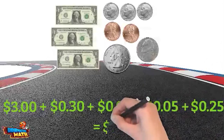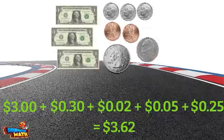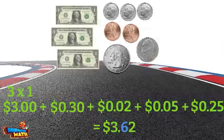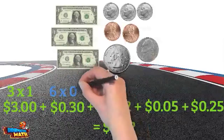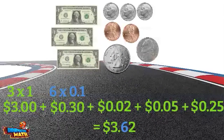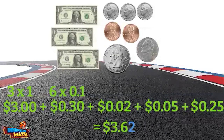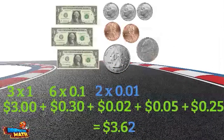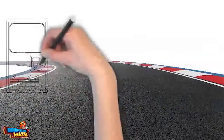Add up the values of all the coins and bills to get three dollars and sixty two cents. There is a three in the ones place with a value of three. There is a six in the tenths place with a value of six tenths — there were only three dimes, but the other coins increased the value of the tenths place. There is a two in the hundredths place with a value of two hundredths. Do you have any change I can borrow? I saw a vending machine down the hall.